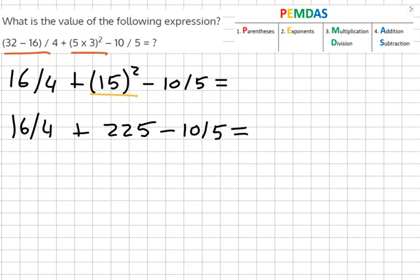Then we go on to the multiplication and division. 16 over 4 equals 4 plus 225 minus 10 over 5 which equals 2.